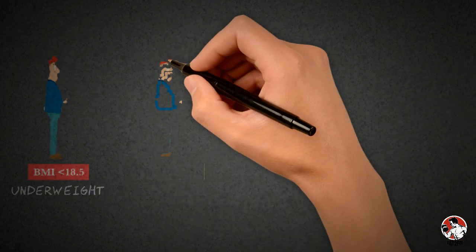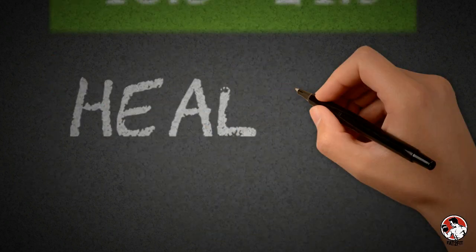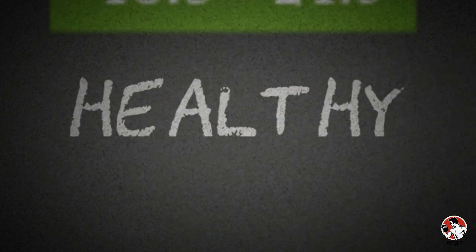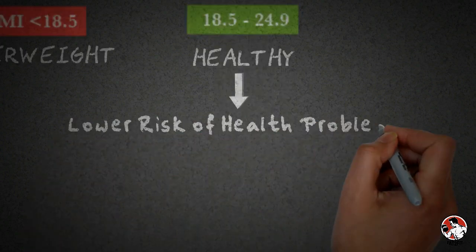A BMI between 18.5 to 24.9 indicates that you are at the healthy weight for your height. By maintaining the healthy weight, you lower the risk of developing serious health problems.